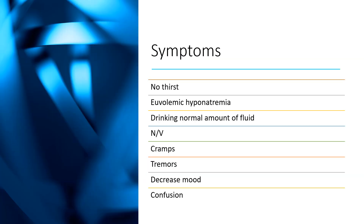What are the possible symptoms? In a normal person when tested, you would be able to drink more water and so on, but in affected individuals that won't be the case. They have what is called euvolemic hyponatremia. They drink a normal amount of fluid but could have nausea and vomiting, cramps, tremor, and changes in mood — becoming depressed with decreased mood.